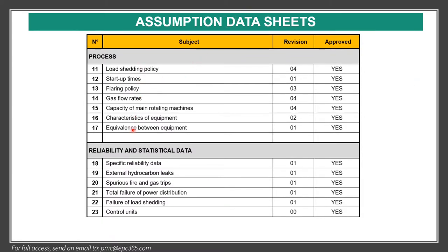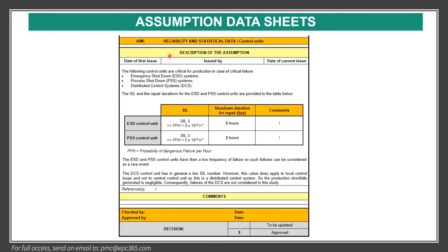Other items in the assumption data sheets include startup time, flaring policy, gas flow rates, and reliability and statistical data about failure of load shedding, control units, and external hydrocarbon leaks. These reliability and statistical data should be reported for traceability and auditability. For example, this was for the control system — it should be written here and checked by, approved by, and given company approval. All assumption data should be traceable and auditable.